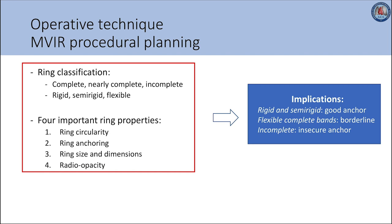Rings can be broadly classified as complete, nearly complete, or incomplete, and also as rigid, semi-rigid, or flexible. We will discuss four important ring properties to be considered for mitral valve-in-ring suitability: the ability to become circular, the ability to provide a good anchor for secure transcatheter heart valve placement, whether ring size and dimensions can accommodate currently available transcatheter heart valves, and the degree of radio-opacity. Rigid and semi-rigid rings provide a good anchor, while flexible complete rings may or may not provide a good anchor. Incomplete rings, regardless of rigidity, do not provide a secure anchor.